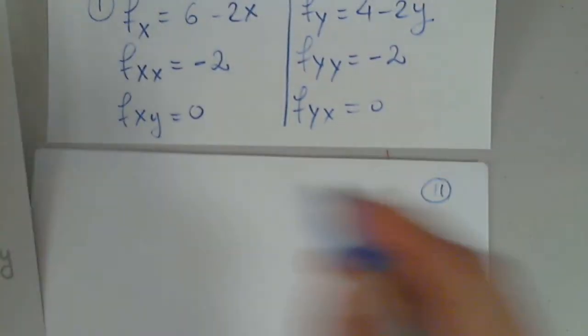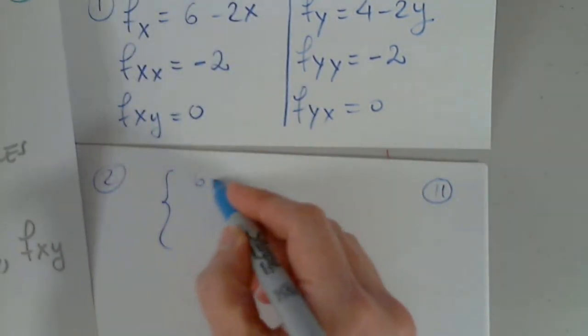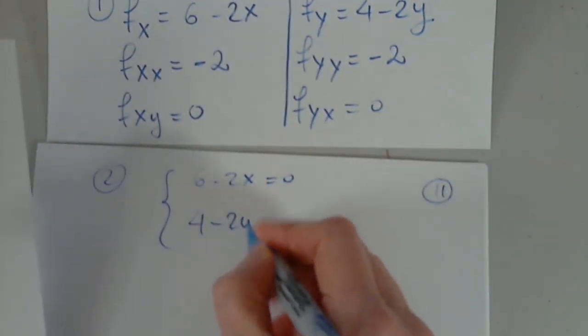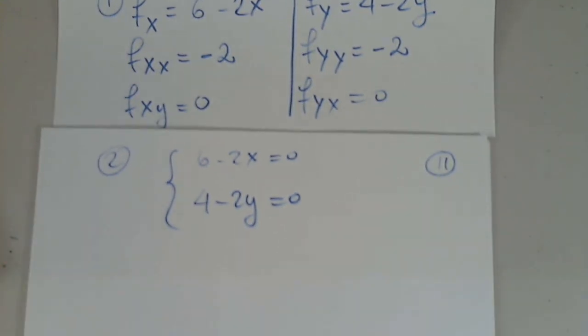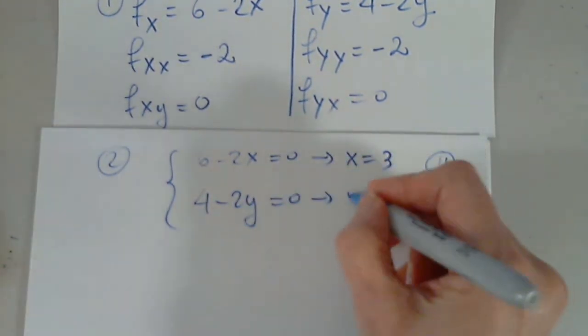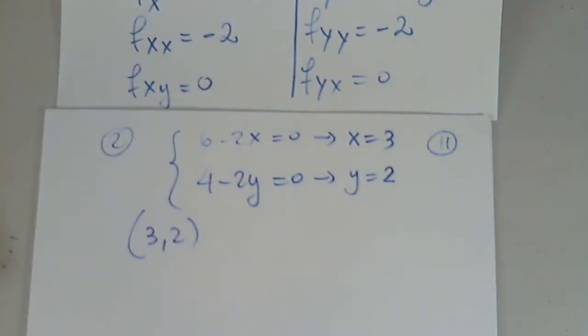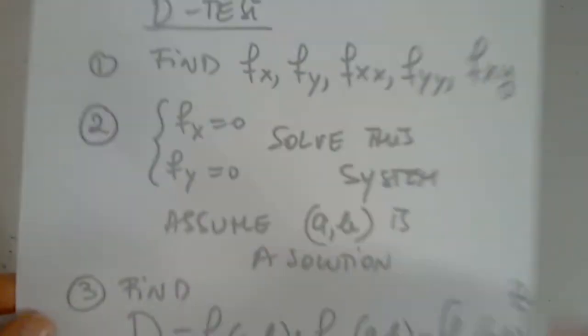Now, in step 2, I have to solve this system. And the system is fx: 6 minus 2x equals 0. And fy: 4 minus 2y equals 0. And the question is, does it have a solution? Yes, it does. So when I solve this for x, I get x equals 3. When I solve this for y, I get y equals 2. So the ordered pair, the so-called a comma b exists. I found only one. So that was step 2.